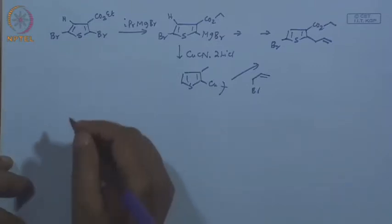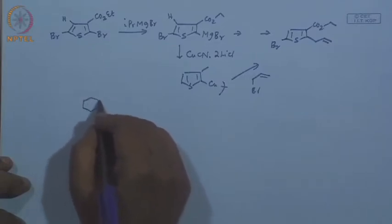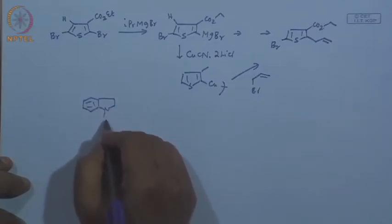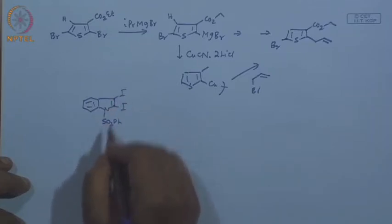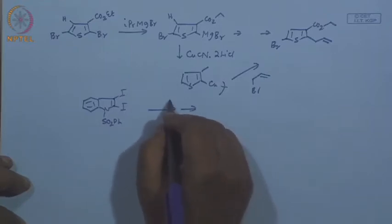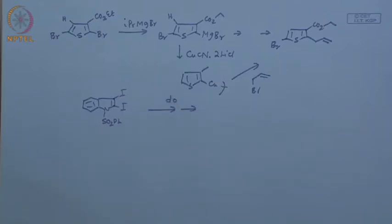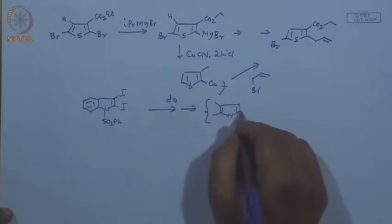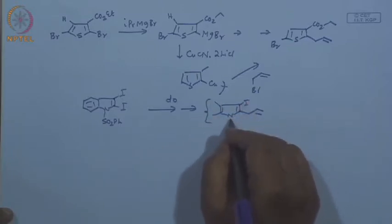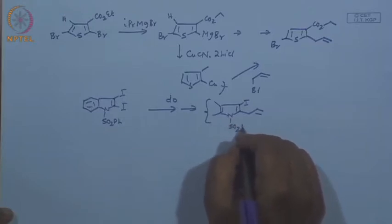Likewise, the same sequence can be applied to indole chemistry. You take a protected diiodoindole and apply the same sequence as above. Now you have the option of selectivity — you have two different iodines, and you know which one, the one next to the nitrogen, will undergo the exchange. You will get to the product where one iodine can be selectively replaced.